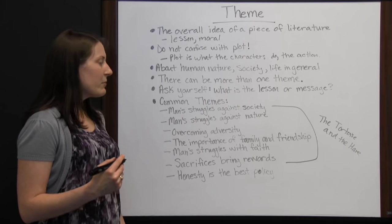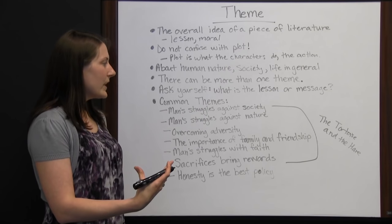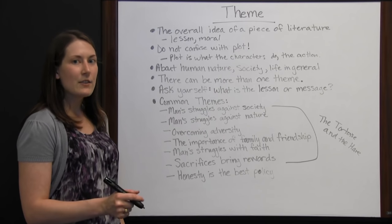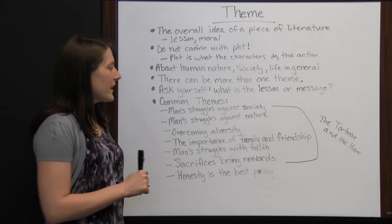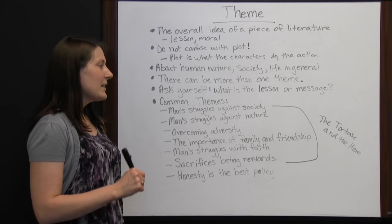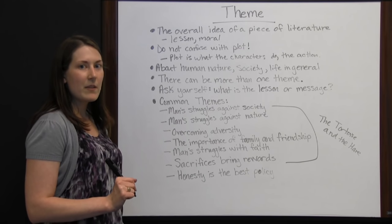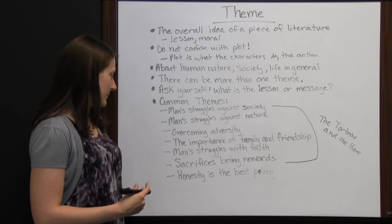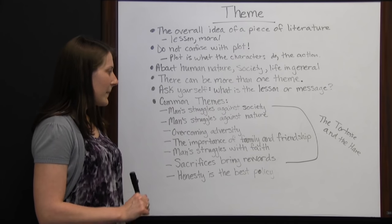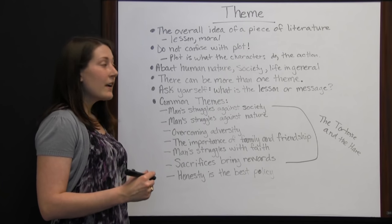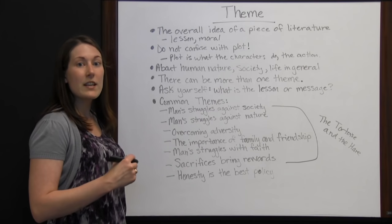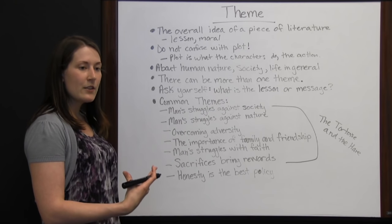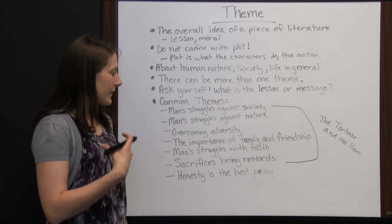Overcoming adversity — the tortoise ended up winning even though no one expected it, even though people were probably telling him the hare would always beat him. The importance of family and friendship — the tortoise likely had family and friends urging him on, helping him feel like he could win. Man struggles with faith — the tortoise had to have faith in himself, while the hare was so cocky he took a nap. The tortoise kept faith and gave it his all.